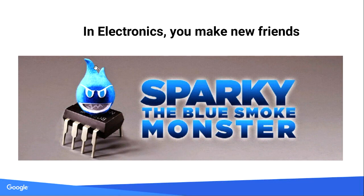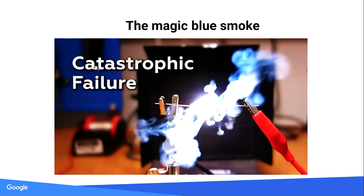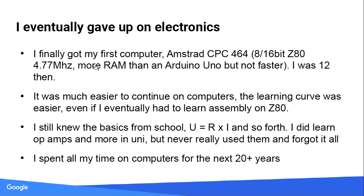When you do electronics, you get friends with the smoke — it has different ways of hiding. That means another trip to the store, although nowadays you have Amazon. The point is I gave up on electronics when I got my first computer, because I didn't have to keep buying stuff. I understood what I was doing a lot more, even though I was soon programming in assembly language. Somehow assembly was easier for me to understand than electronics, and that's mostly what I've been doing since then.